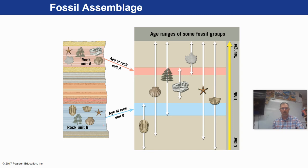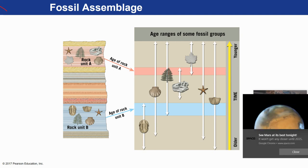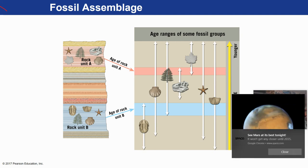Here's a fossil assemblage diagram showing rock unit A. You're going to see this diagram in one of the worksheets where you'll take and correlate layers based on fossils that are in them. You can see that some of these make better index fossils than others.